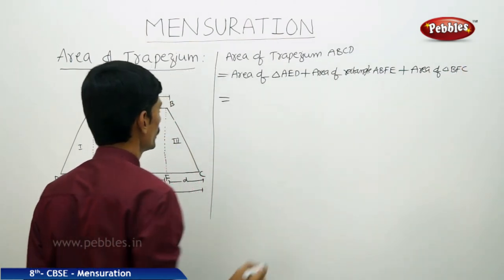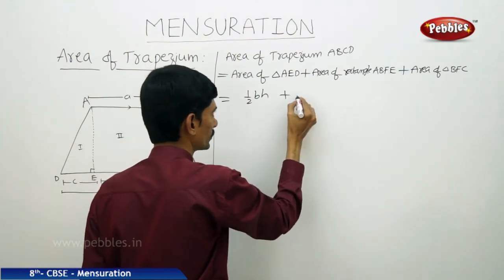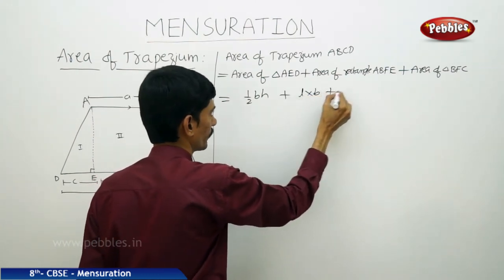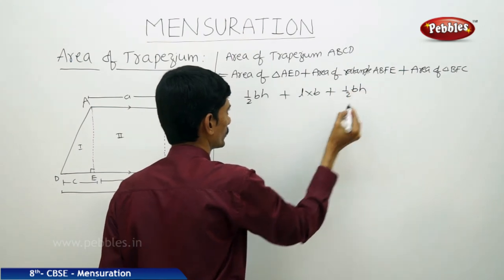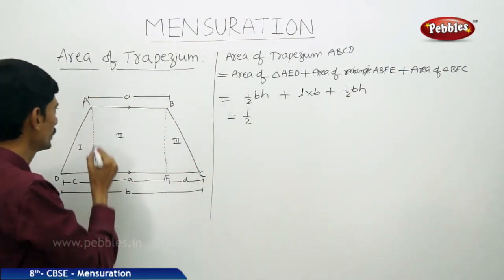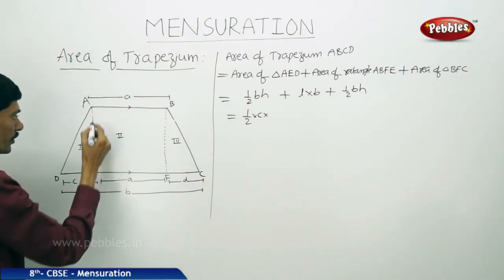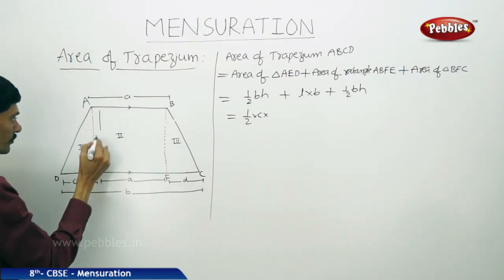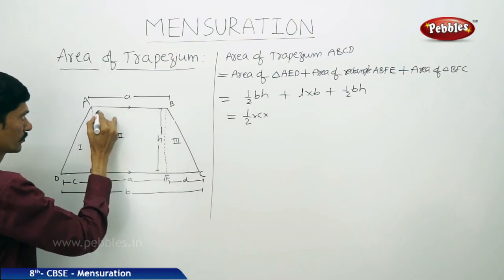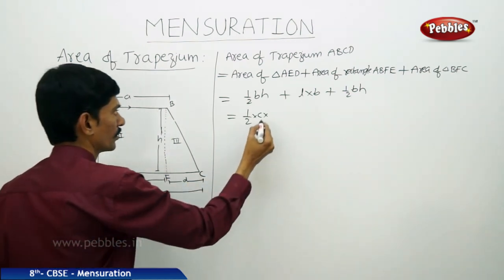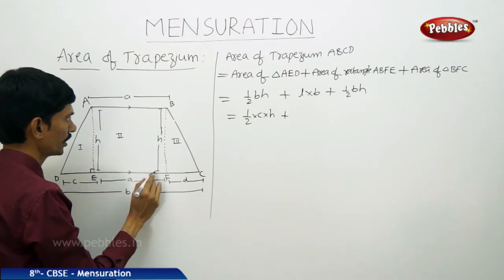Area of triangle AED equals half times base times height, and area of rectangle is length times breadth, plus area of triangle BFC equals half times base. Both perpendicular heights are equal, so let the height be H. The length of the rectangle is A and the breadth is H.